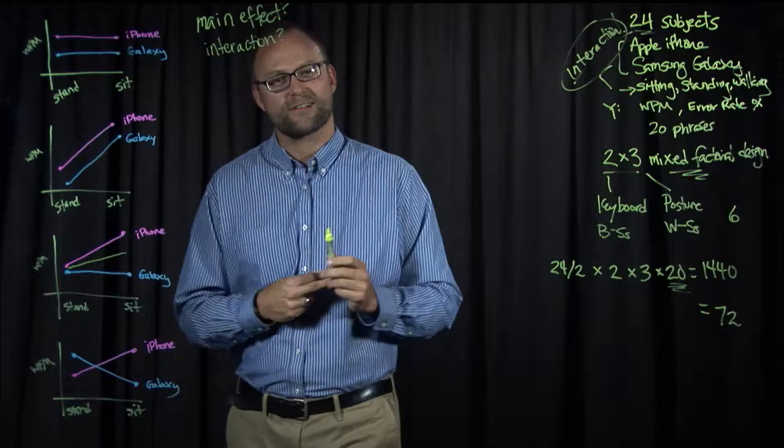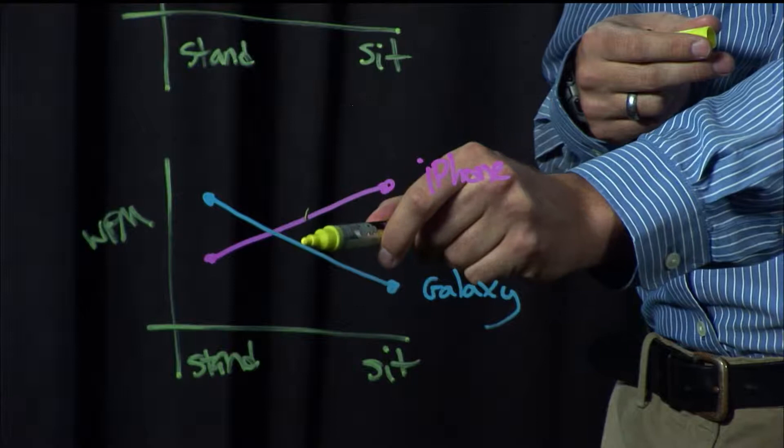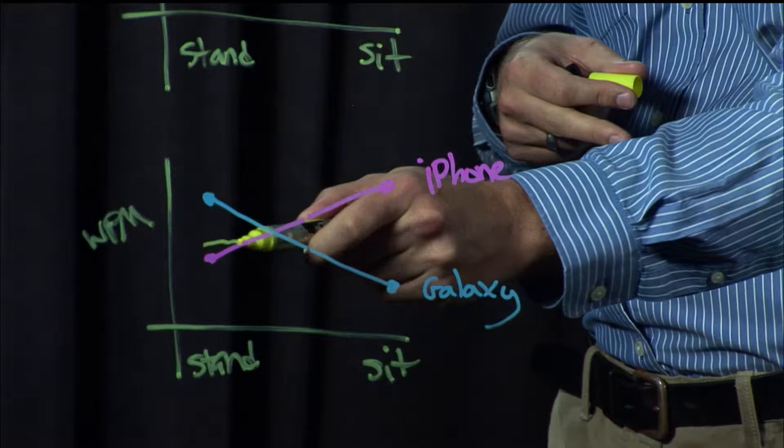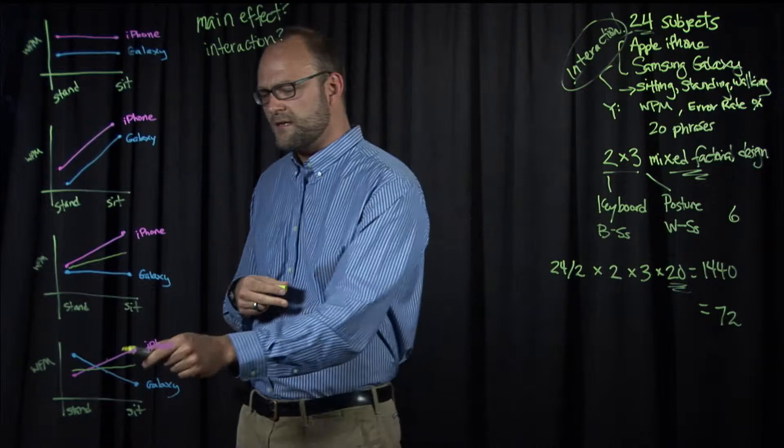And this last graph also clearly shows an interaction. So let's do our three questions. Is there a main effect of keyboard? Well, maybe if we take the center of each keyboard there may be slight separation. So perhaps the iPhone still is performing better. But maybe it's too close to call. Is there a main effect of posture? Well actually, if we draw a line between our lines here, we can see that overall there's not maybe that much change in posture.